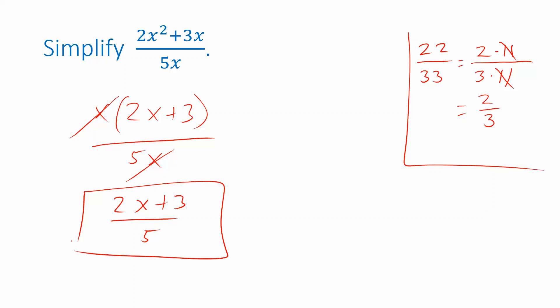That's a simplified expression that represents almost the same thing. Now take a look. There's a slight difference between these two. You cannot plug x equal to 0 into the rational expression we started with. Because if you did, your denominator would be 5 times 0, which is 0, and you're never allowed to divide by 0.